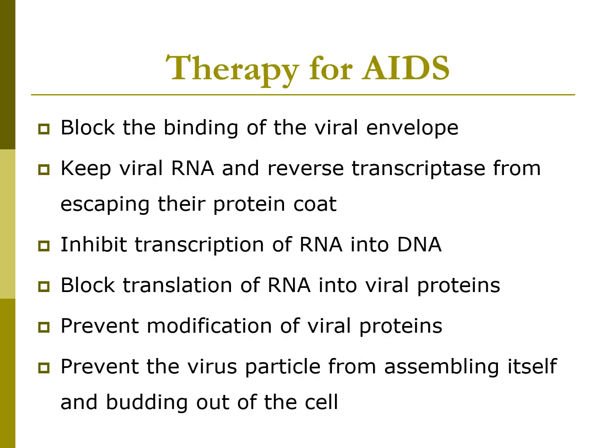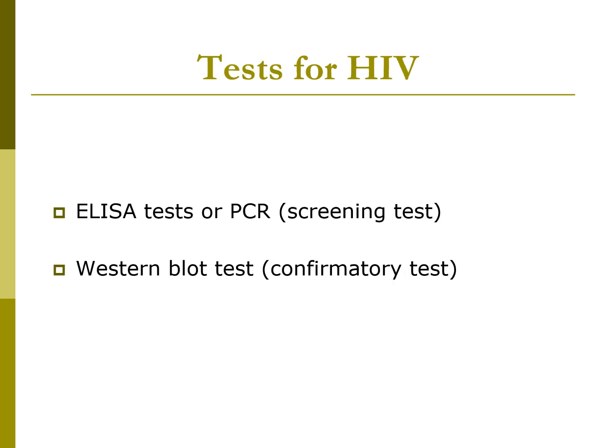There are a number of emerging therapies for AIDS, including blocking the binding of the viral envelope, keeping viral RNA and reverse transcriptase from escaping their protein coat, inhibiting transcription of RNA into DNA, blocking translation of RNA into viral proteins, preventing modification of viral proteins, and preventing the virus from assembling and budding out of the cell. Standard HIV testing uses ELISA or PCR as screening tests, and Western blot as the confirmatory test. In Western blot, proteins are electrophoretically separated into bands, each tested with individual serum — black bands appearing with certain antigen-antibody combinations equal a positive HIV result.